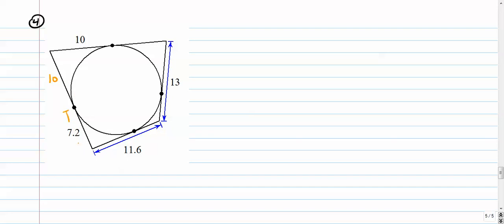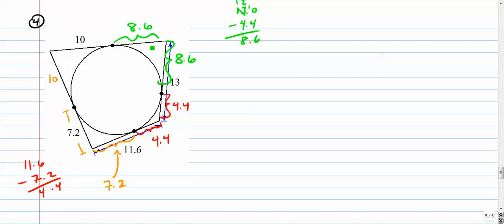This guy is 7.2, which means this guy is 7.2. That means over here is the whole thing, 11.6 minus 7.2, and that's 4.4, which means this guy is 4.4. Moving around here, we have the whole segment is 13, 13 minus 4.4. So we're going to go 13 minus 4.4, this is an 8.6. 8.6 is right here, which means this is 8.6 as well.